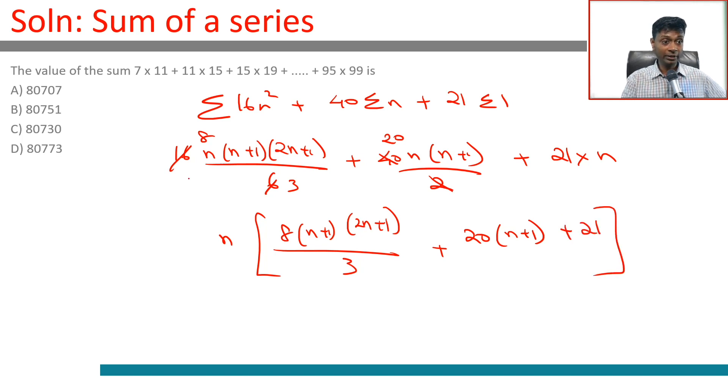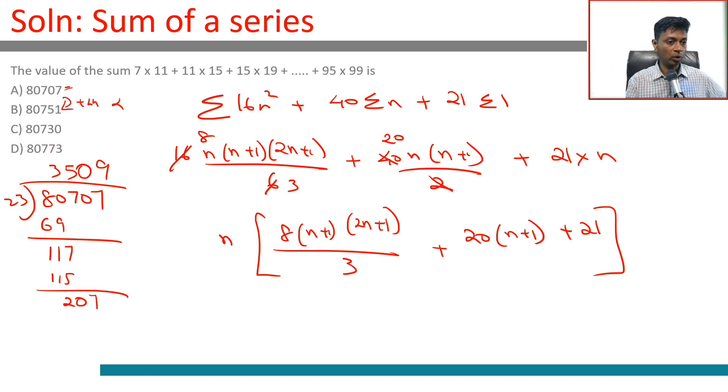This is what we're looking to find so we can test divisibility. 80707 divided by 23 goes 3 times 69, then 117, 5 times 115. So this is a multiple of 23. This number plus 44 doesn't work.